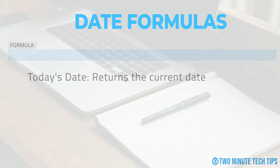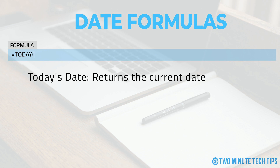Let's start with our first example: to return a value of today's date. Start typing the formula by entering the equals sign in the selected cell to indicate that you are entering a formula. Type TODAY in capital letters, followed by an opening parenthesis. This opening parenthesis begins the formula. To end the formula, type a close parenthesis.